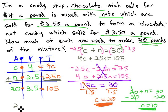Clearly stating our answer, we have 20 pounds of chocolate and 10 pounds of nuts.